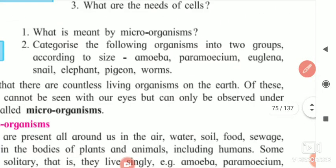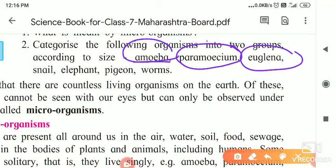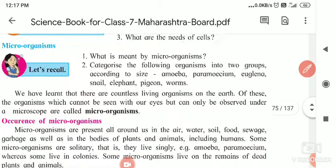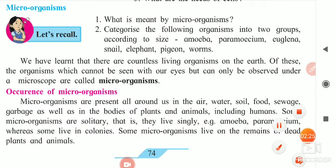Categorize the following organisms into two groups according to size. Amoeba is a single-cell animal — it is a unicellular animal. Paramecium is also a unicellular organism. Euglena is also a unicellular organism. They are microorganisms; we cannot see amoeba, paramecium, or euglena with our naked eyes. Then there is snail, elephant, pigeon, and worms — these are large animals. Amoeba, paramecium, and euglena are very small; we have to use the microscope for that purpose.